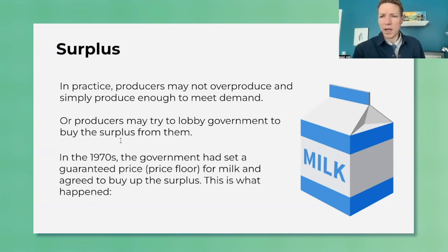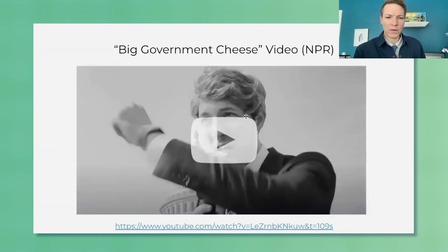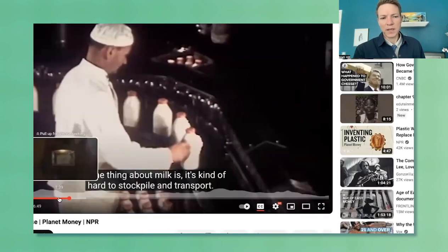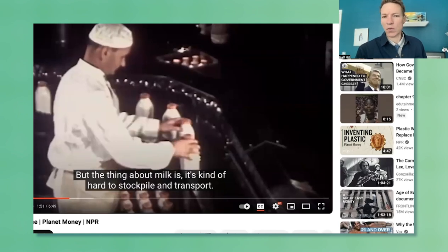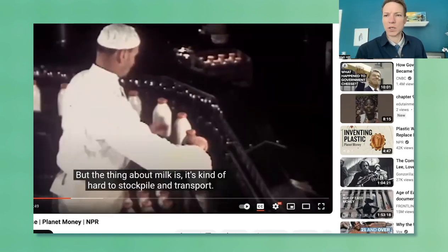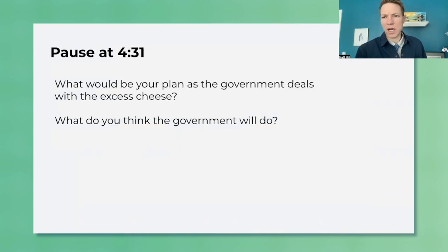To illustrate this, there's a clip from an NPR Planet Money video about a 1970s policy with a price floor on milk. There was all this excess milk and the government agreed to buy it up. The video starts in the middle — you'll need to set up that there is a price floor on milk causing a surplus. There are a couple of pause points where you can ask students questions, including a fun one about what the government did with all the excess cheese.